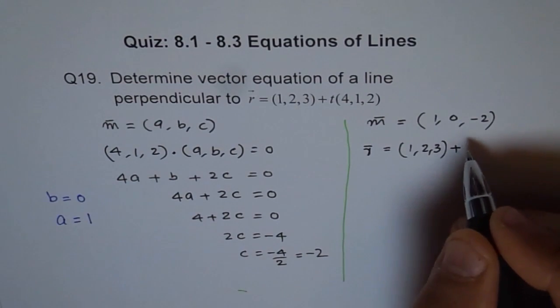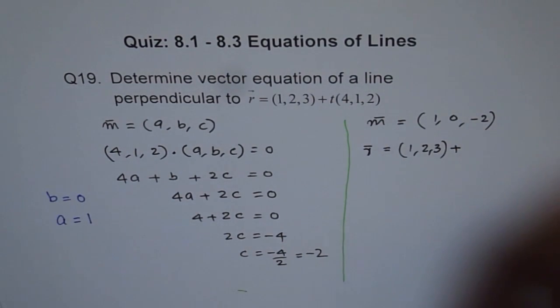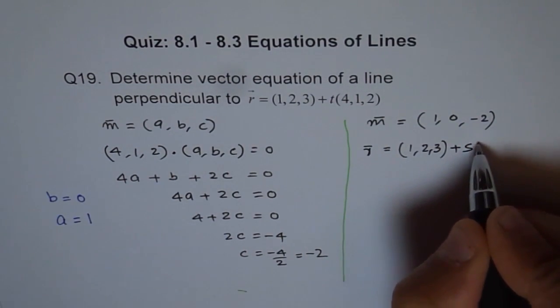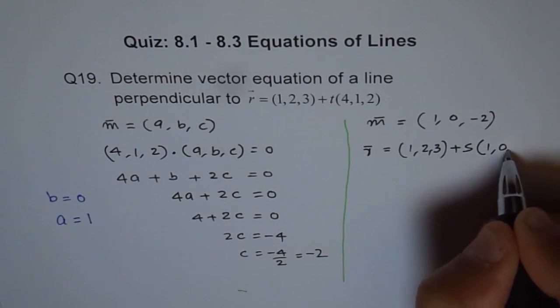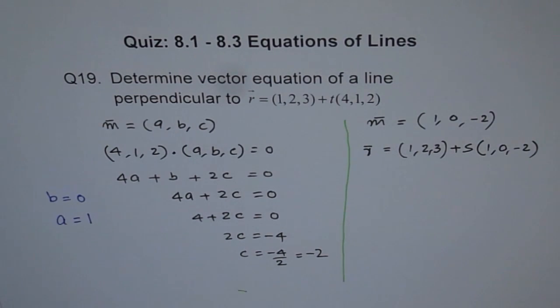Plus T. You may use T, S, P, whatever you want. Let me write S this time. And that's my direction vector, (1, 0, minus 2). So this line is perpendicular to the given line.